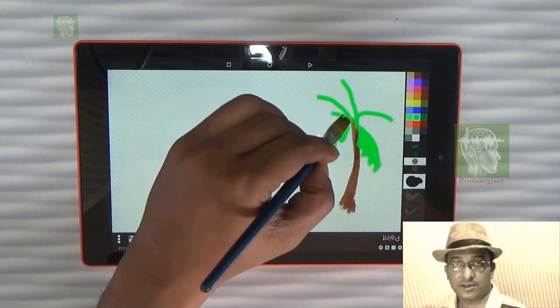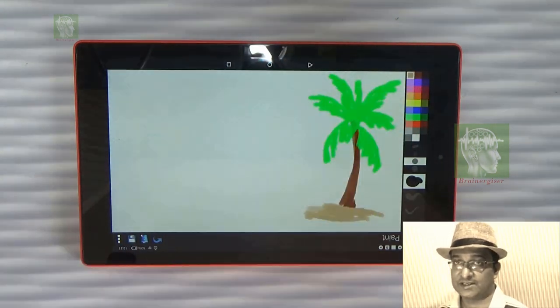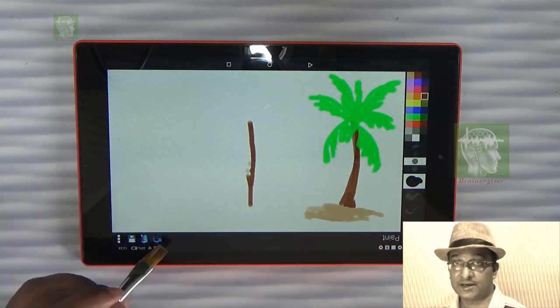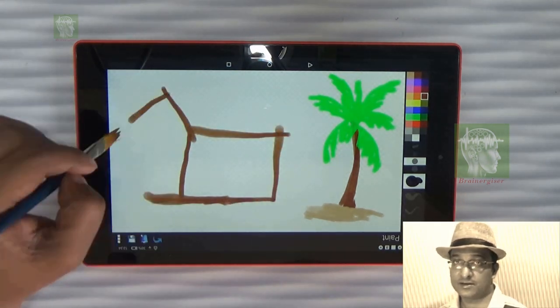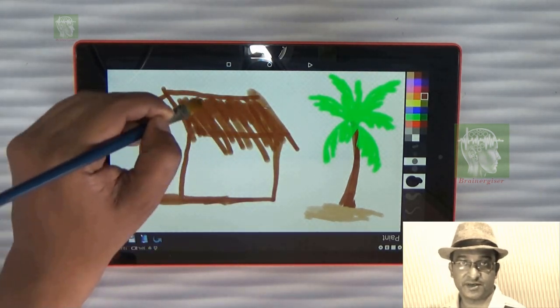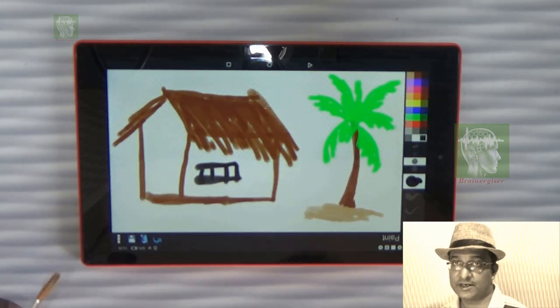Nowadays there are many softwares our kids are using to draw circles, straight lines, to fill the colors. But drawing something with paint is really something different, a different skill that a student will get.